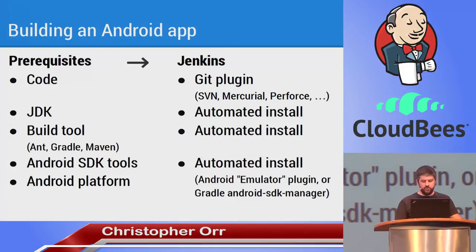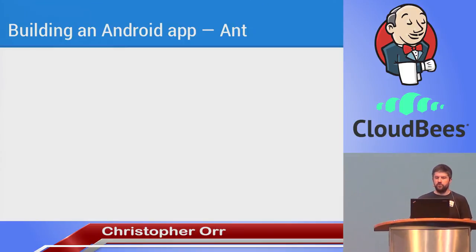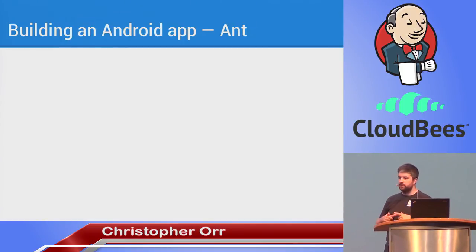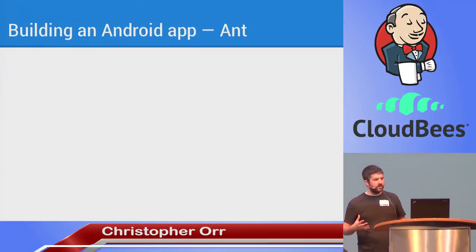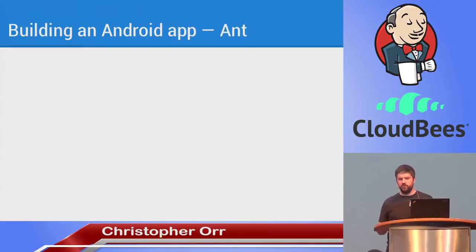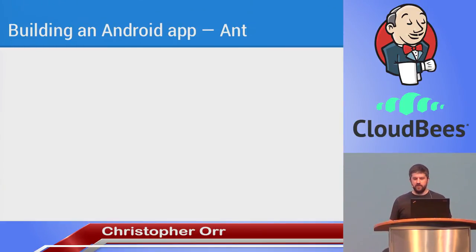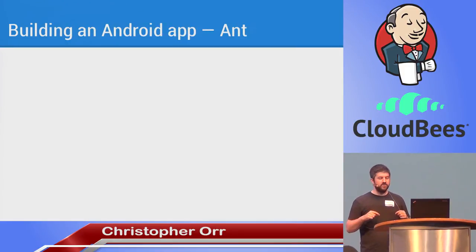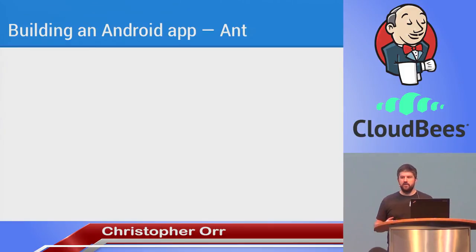So those are the prerequisites. Let's take a look at the steps required to actually build an app. There are two official build systems from the Android tools team. Ant is the one that's been there from the very start. But for well over a year there's been a Gradle build system in the works — it's pretty much at a 1.0 state now. Google's development conference, Google I/O, is starting today in San Francisco, so hopefully they'll make some nice announcements.